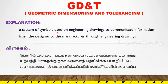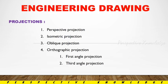GD&T is a system of symbols used on engineering drawings to communicate information from the designer to the manufacturer through engineering drawings. As a designer, there is no component without communication and without accurate information. That is the geometry and the tolerancing symbols. So we must include the information in the engineering drawing using GD&T.